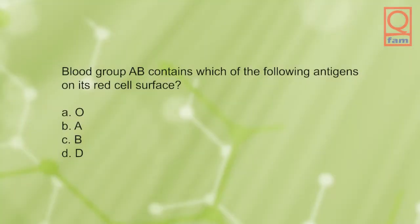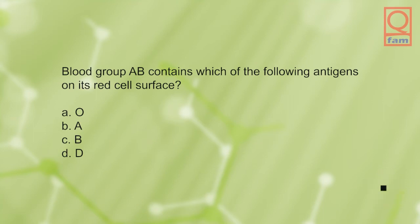Blood group AB contains which of the following antigens on its red cell surface? A) O, B) A, C) B, D) D. The answer is B and C, A and B antigens.